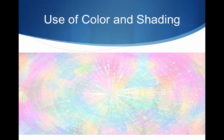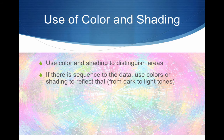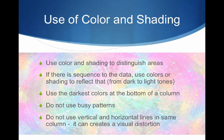The use of color and shading can be very helpful. Use color and shading to distinguish certain areas. If there is a sequence to the data, use colors or shading to reflect that from dark to light tones. Use the darkest colors at the bottom of a column. Do not use busy patterns, and do not use vertical and horizontal lines in the same column — it can create a visual distortion.